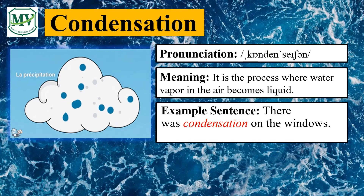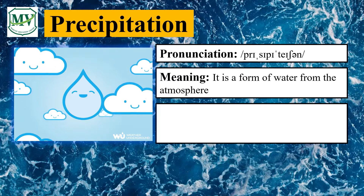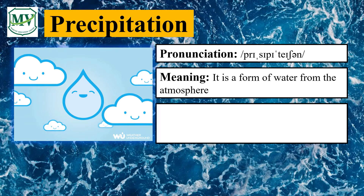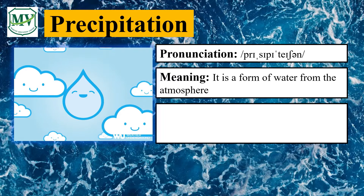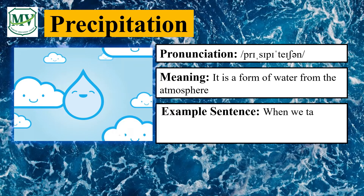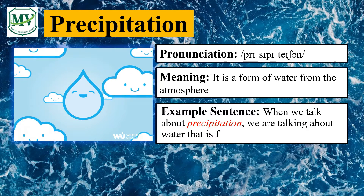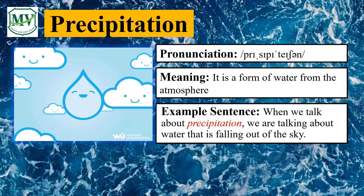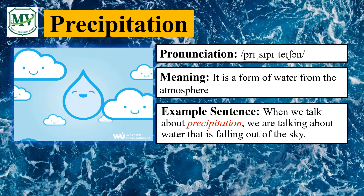Now let's learn another one. For our last word, say the word with me: Precipitation. Very good! Can you read the word by yourself? Now let's learn an example sentence. When we talk about precipitation, we are talking about water that is falling out of the sky. Please read the sentence on your own. Amazing!